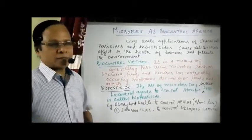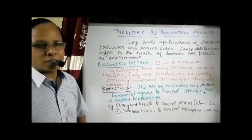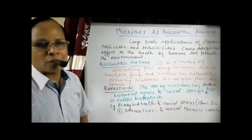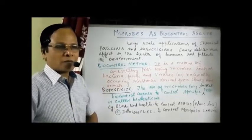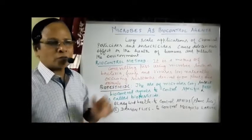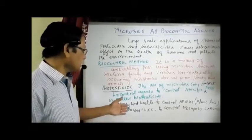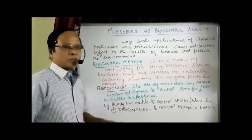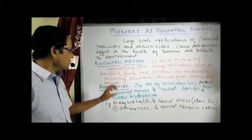Another example is dragonflies. They are used as larvae-feeding insects because they control mosquito larvae — they feed on mosquito larvae. The dragonfly has a head, thorax, and long abdomen, with two pairs of wings, and belongs to the order Odonata. Dragonflies are the best insects to control mosquito load. These are examples for biopesticides.